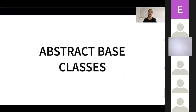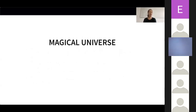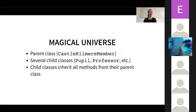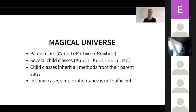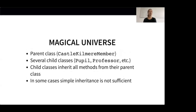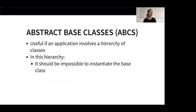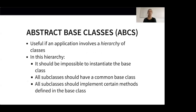In the last 40 minutes, we have created several classes and methods. We have a parent class called CastleKilmier Member and several child classes like Professor or Pupil. The child classes inherit all methods from the parent class. But there are other more advanced applications where simple inheritance is not sufficient — this is where abstract base classes come into play. Abstract base classes are useful if your application involves a hierarchy of classes. In particular, in this hierarchy it should be impossible to instantiate the base class, all subclasses should have a common base class, and all subclasses should implement certain methods defined in the base class.